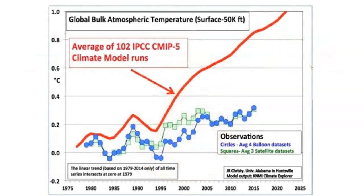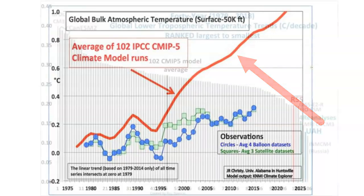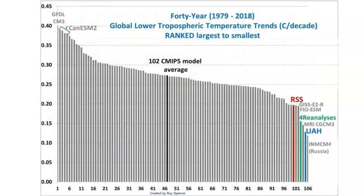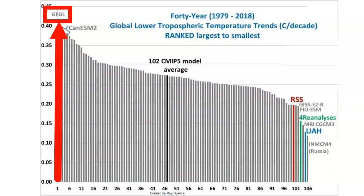Manabi's GFDL model was much hotter than the average of all the other climate models, as represented by this red line. This bar graph shows that his GFDL climate model was indeed the hottest of them all.